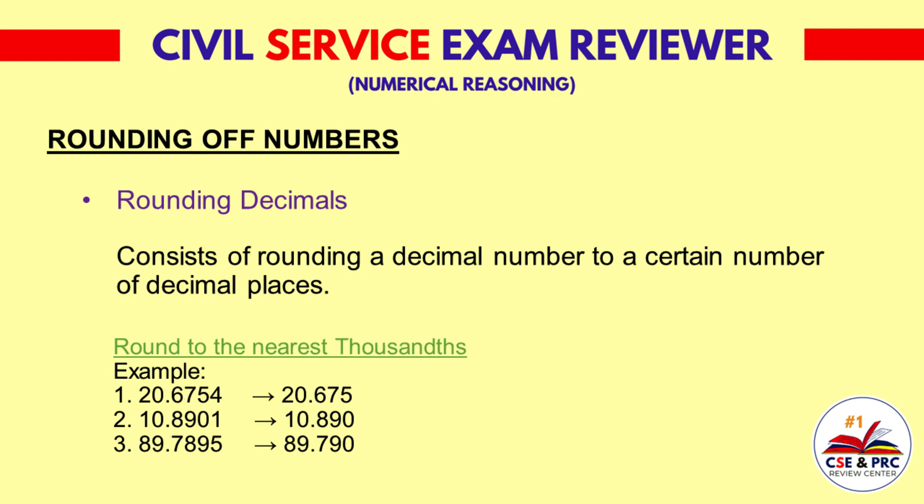Round to the nearest thousandths. Example 1: 20.6754 — the result will be 20.675. Example 2: 10.8901 — the result will be 10.890. Example 3: 89.7895 — the result will be 89.790.